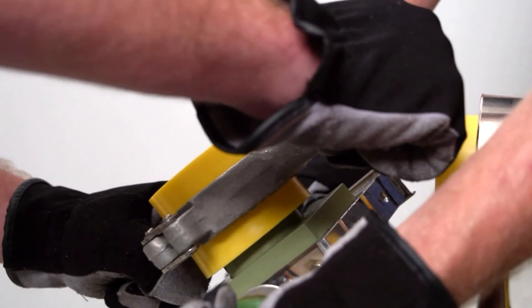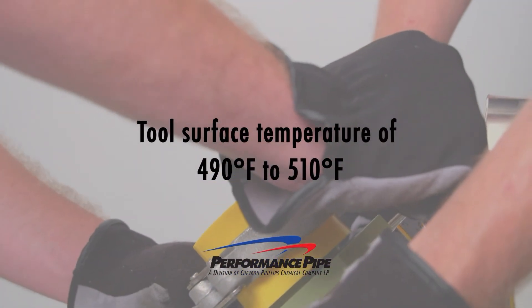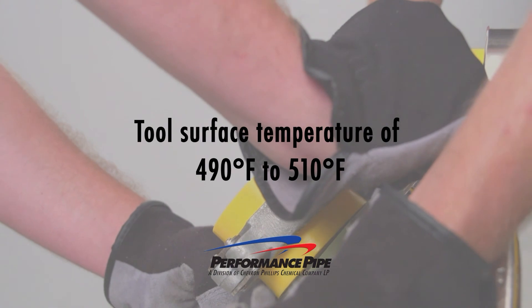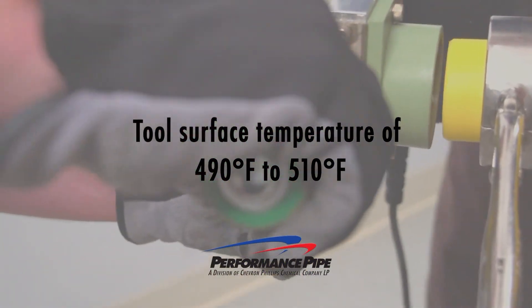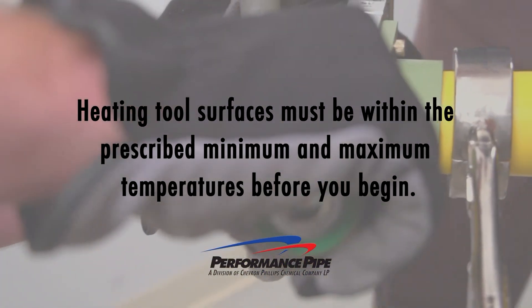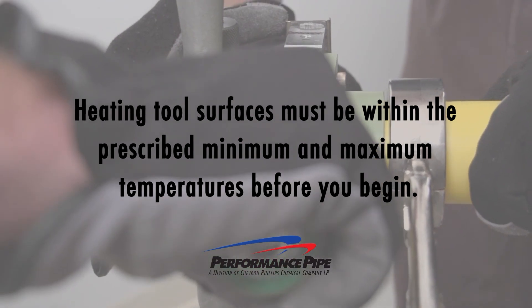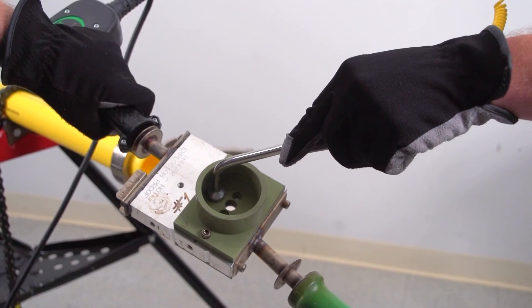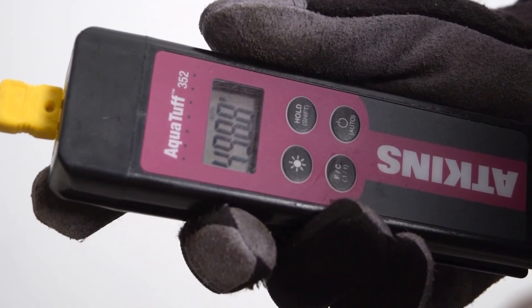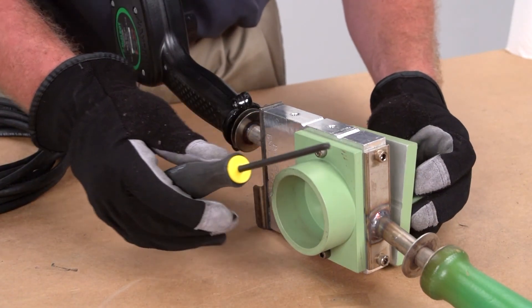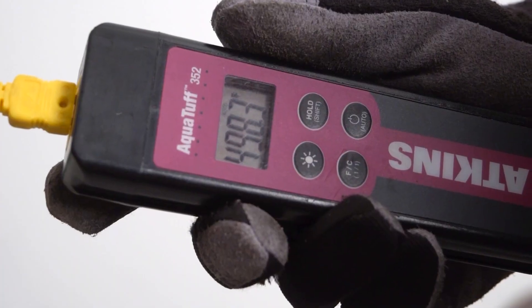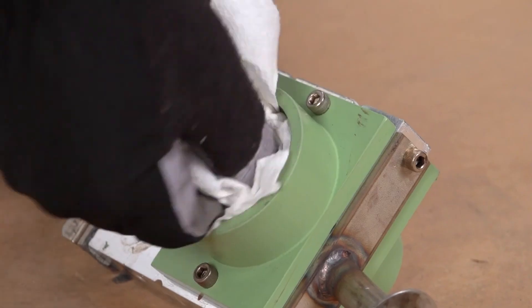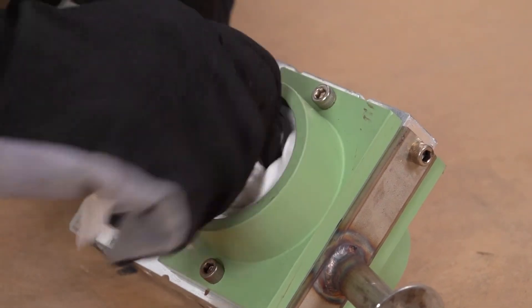Performance Pipe recommends the following heating tool surface temperature. Where heating tool surfaces will contact the pipe or the fitting, all points on both heating tool surfaces must be within the prescribed minimum and maximum temperatures before you begin. Use a pyrometer to verify the actual surface temperature. Install the correct faces on the heating tool and heat to the correct surface temperature. The male and female socket faces on the heating tool must be clean.